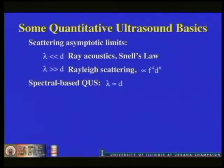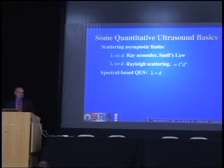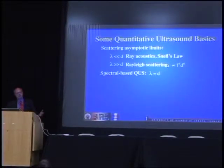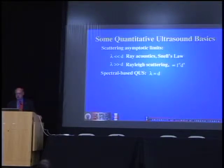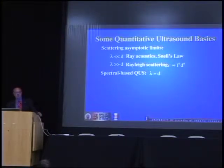The concept we use is working in the sweet spot of the back-scattered signal. In physics and engineering, we always work with asymptotic approximations — either the wavelength is very small relative to objects of interest, where we use Snell's law, or very large relative to what we're scattering, where we deal with scattering principles. This technique works best when the wavelength is about the same size as the object or objects of interest.